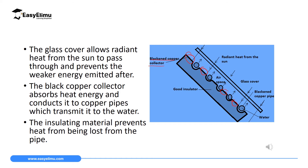The good insulator — a wood insulator — is placed beneath the copper pipes and collectors. Its function is to ensure that heat received by the pipes is not conducted away into the environment, since insulators do not conduct heat. This maintains all the heat within the copper collector and copper pipes.